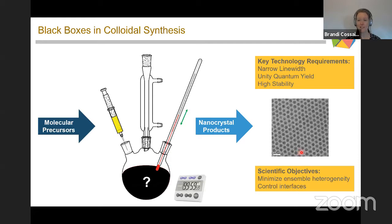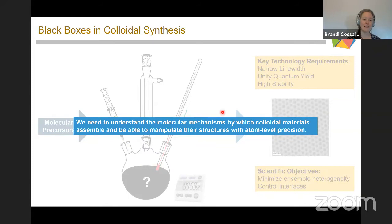Through empirical optimization, we can get out really nice-looking nanocrystals. This gets us to a roadmap of connecting technology requirements - in quantum dot land, things like narrow line width, high quantum yield, high stability - back to our scientific objectives of minimizing ensemble heterogeneity and controlling interfaces. Getting to this point really comes back to this idea of mechanism. We need to understand the mechanism by which these nanocrystals grow to make them as well as we need for our specific technology applications.